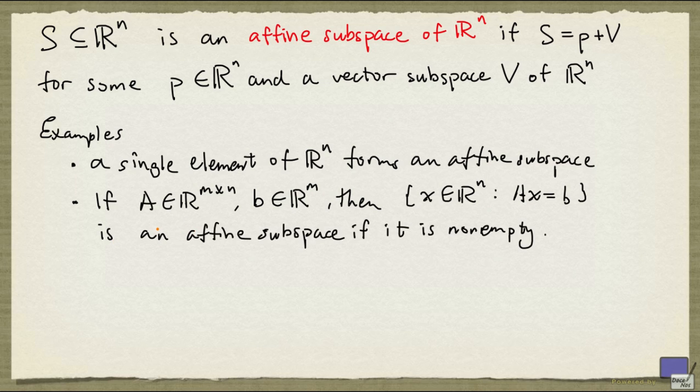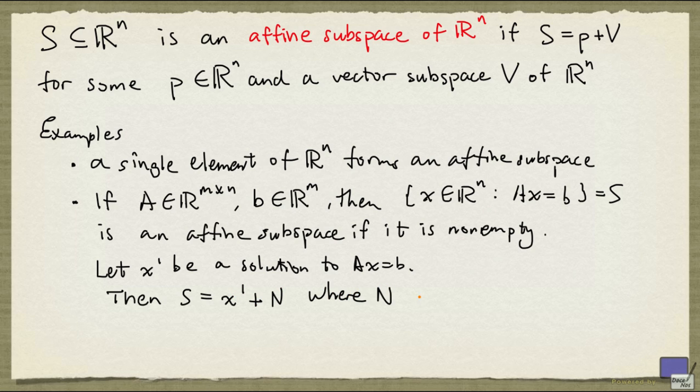It's not difficult to see that this is the case. Let X prime be a solution to the system Ax equal to B. We call this setup here S, then S is simply X prime plus N, where N is the null space of A.